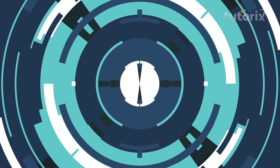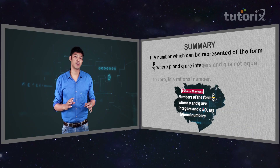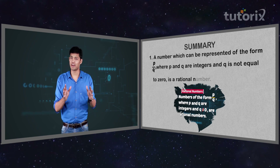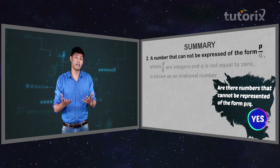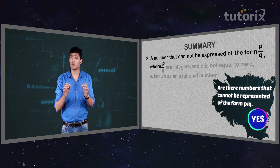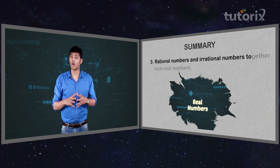So friends, we have defined both rational numbers and irrational numbers. Both rational numbers and irrational numbers together are known as real numbers. In our next video, we will be trying to represent real numbers on the number line. To summarize: a number which can be represented in the form p by q, where p and q are integers and q is not equal to zero, is a rational number. A number that cannot be expressed in that form is known as an irrational number. Rational numbers and irrational numbers together form real numbers.